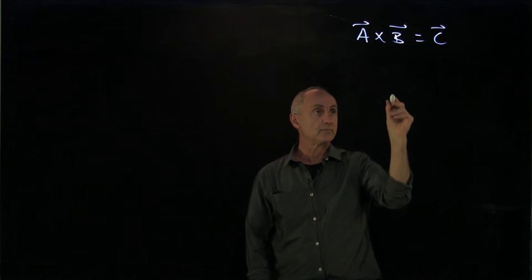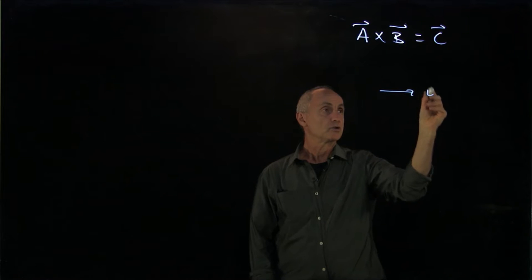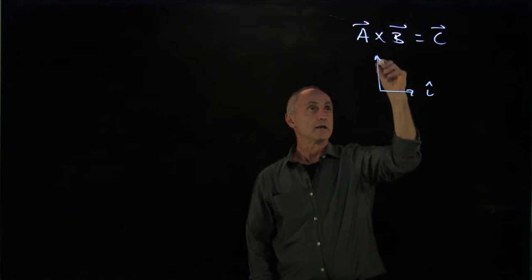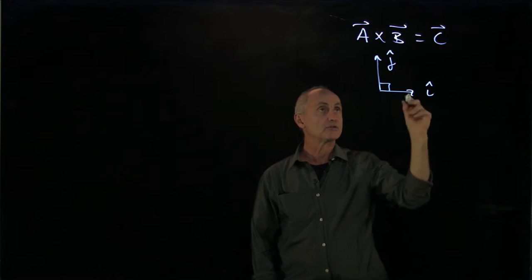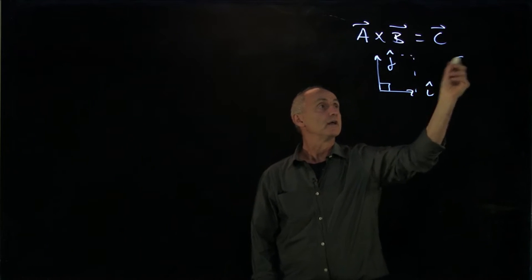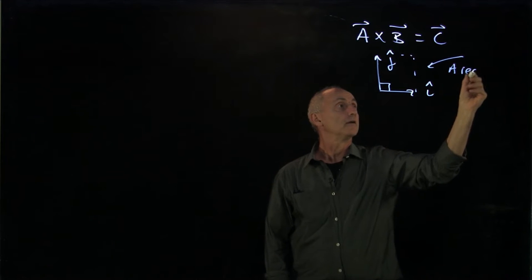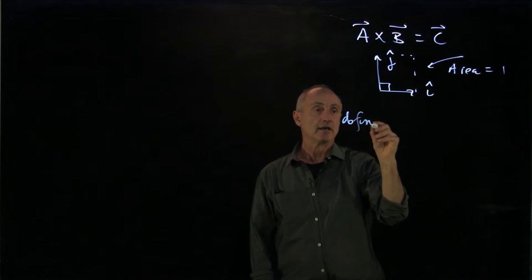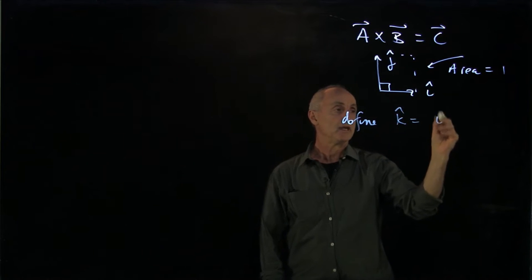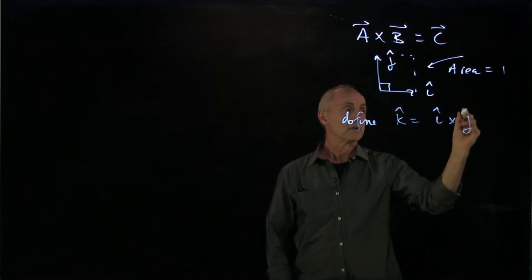So let's begin by choosing two vectors, i hat and j hat. And notice they're at a right angle. And because there's a unit vector, the area here is equal to 1. And I want to define k hat to be equal to i hat cross j hat.